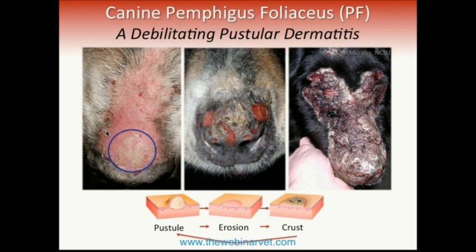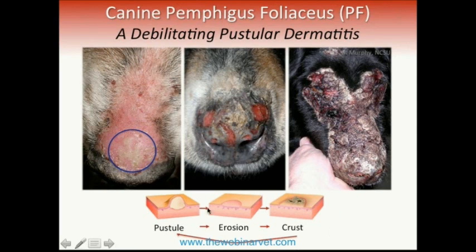Pemphigus foliaceus, as you can appreciate from the pictures, is a debilitating pustular disease. This is extremely important because there are almost no autoimmune skin diseases that are pustular in origin. The first primary skin lesion is a subcorneal, very superficial and fragile pustule. This fragile pustule can erode very easily, causing erosions as seen in the middle picture. Because of the rapid turnover of the skin, the lesion tends to crust over, and the buildup of crust can be pretty impressive, as seen in the picture on the right.